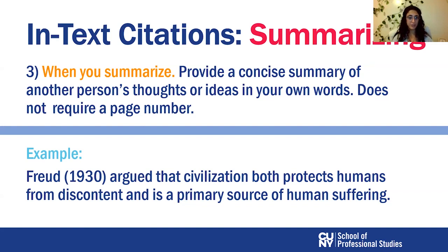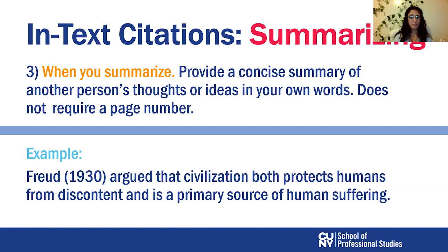Here is an attempt to summarize Freud's book published in 1930 — a summarization of the main ideas of the entire book in a few sentences. The student wrote: 'Freud (1930) argued that civilization both protects humans from discontent and is a primary source of human suffering.' This text did not appear verbatim in the book; it's putting together the main ideas mentioned by Freud.